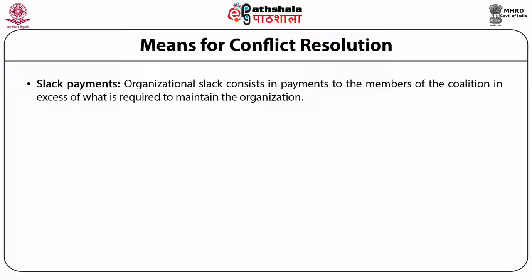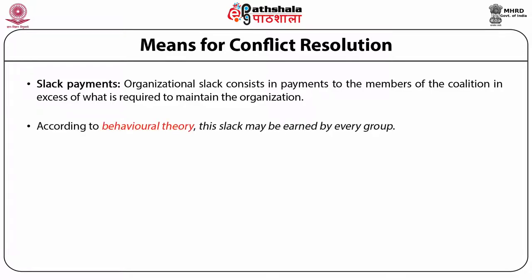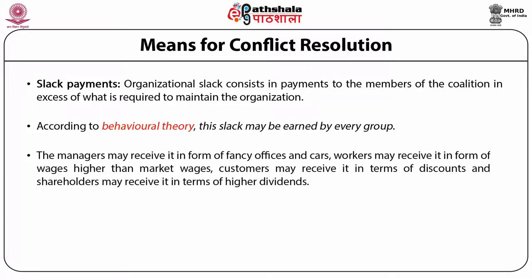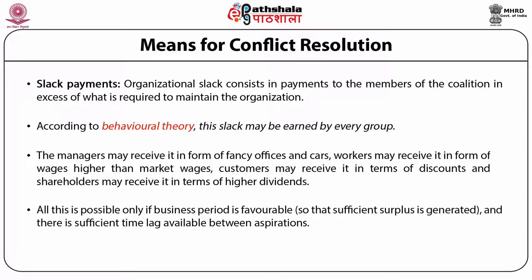Organizational slack consists of payments to members of the coalition in excess of what is required to maintain the organization. According to behavioral theory, this slack may be earned by every group. Managers may receive it in the form of fancy offices and cars. Workers may receive it in the form of wages higher than market wages. Customers may receive it in terms of discounts, and shareholders may receive it in terms of higher dividends. All this is possible only if the business period is favorable so that sufficient surplus is generated.